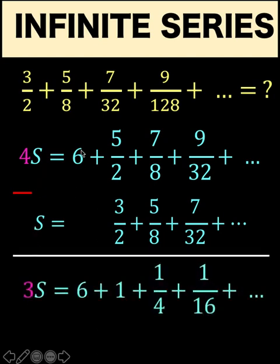And performing the subtraction, 4S minus S is 3S, bring down 6. And then, subtract each term pair by pair. And for the terms beyond these 3 dots, we just write 3 dots here also.